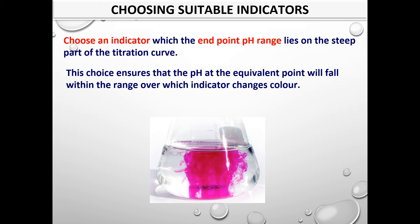It is important to choose a suitable indicator to be used for a titration. You will need to choose an indicator which the endpoint pH range lies on the steep part of the titration curve. This choice ensures that the pH at the equivalence point will fall within the range over which the indicator changes color.